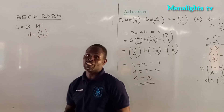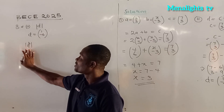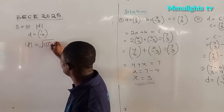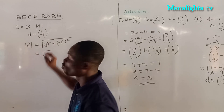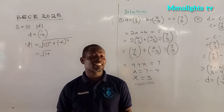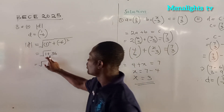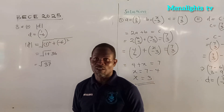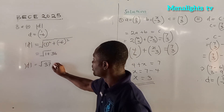Now we find the length or magnitude of d. The d that we have is (1, -6). The magnitude of d is the square root of 1 squared plus (-6) squared. So 1 squared is 1 times 1, which gives us 1. Then minus 6 squared is (-6) times (-6), which gives us 36. So the root of 1 plus 36 gives us the root of 37. Therefore the length of d is equal to root 37 units.